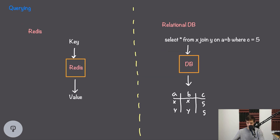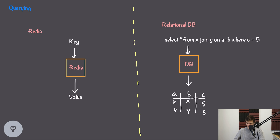Looking at the querying capabilities, Redis is very simple — we input a key and Redis outputs the associated value. We can search through keys if needed, but that can be a really expensive operation and can slow down the entire Redis server. With a relational database, we input a much more complex query — for example, joining two tables by some condition and filtering results on another condition — and the database outputs a table representing all of that information.